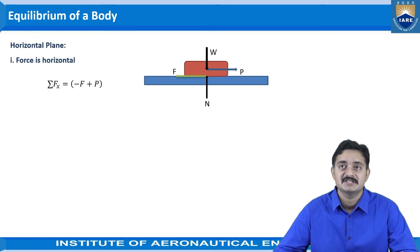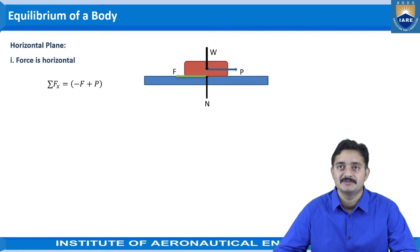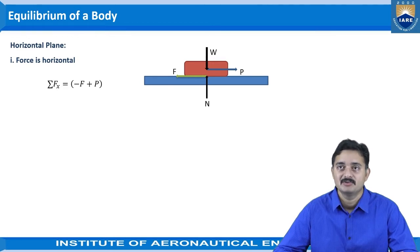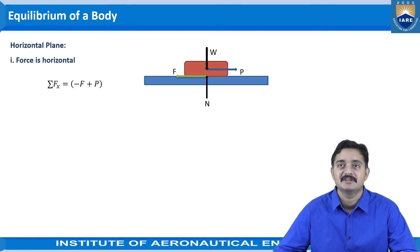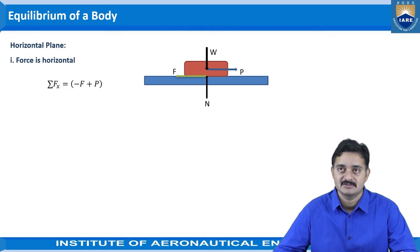All the horizontal forces visible here are the frictional force F and the force P being applied on the object. Sigma Fx, the sum of horizontal components, is written as minus F plus P. We have considered minus F here because the frictional force is acting towards the negative x-axis direction.